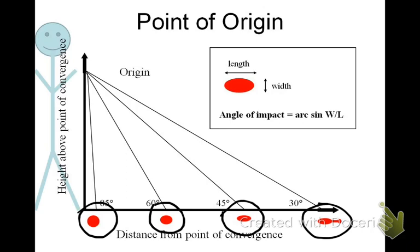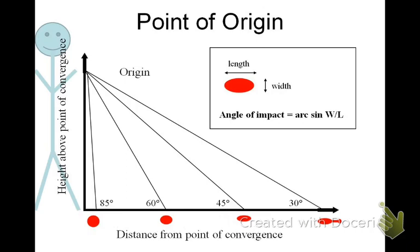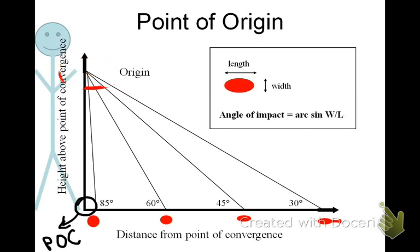This is the y-axis, or the origin. The point of convergence is right here at zero, zero — that's where the person was standing. For the blood drops we measure, we take width divided by length, take the arc sine to figure out the angle of impact, then take string and extend it over to the y-axis. Point of origin is here. So if we have this person standing here, the point of origin on a person of this height is right here — the neck and high chest area. That's where this person sustained their injury.